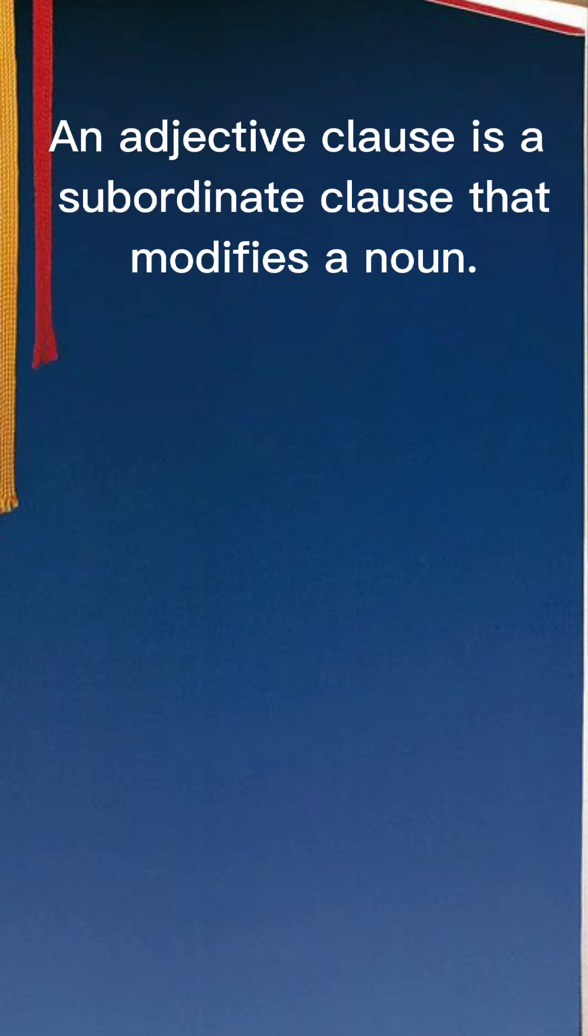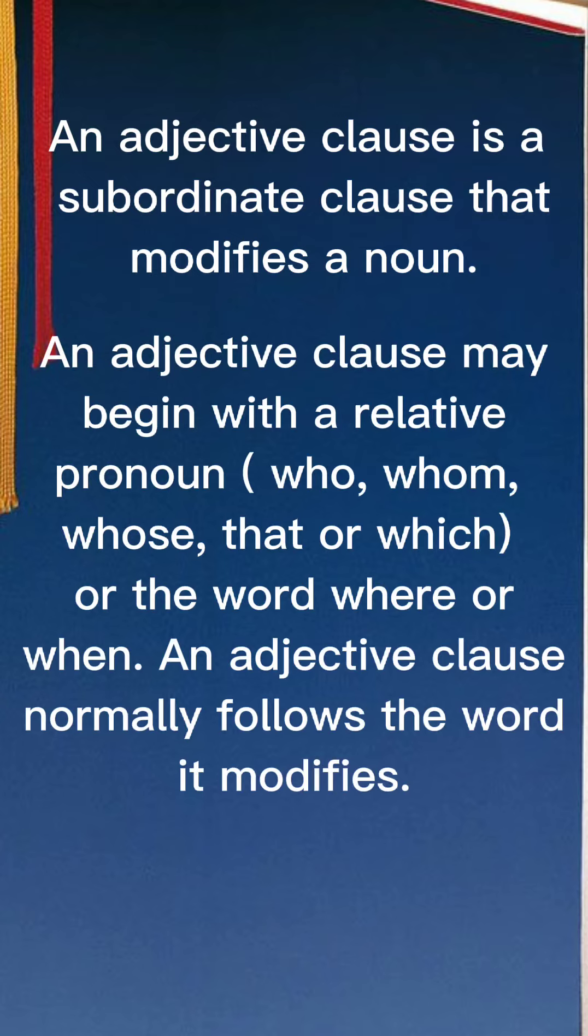An adjective clause is a subordinate clause that modifies a noun. An adjective clause may begin with the relative pronoun who, whom, whose, that, or which, or the word where or when. An adjective clause normally follows the word it modifies.